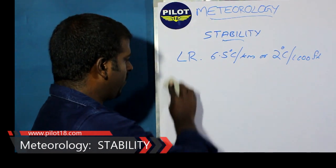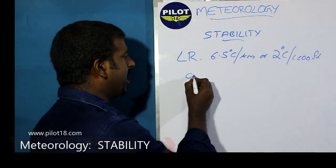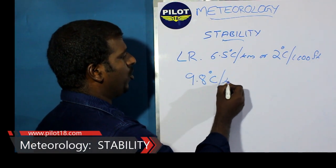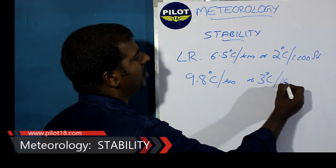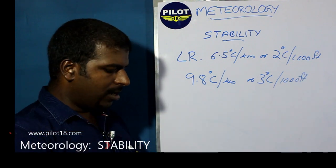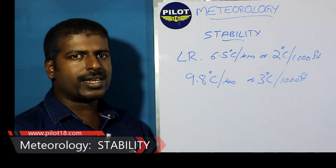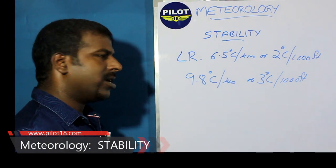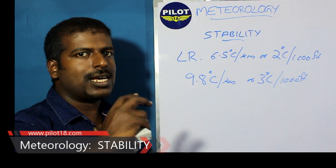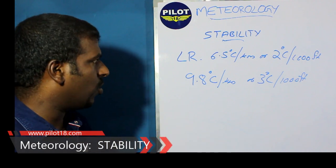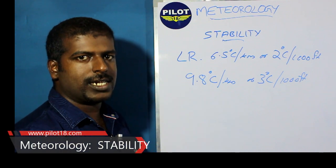What is the DALR value? The dry adiabatic lapse rate of air is 9.8 degrees Celsius per kilometer, or approximately 3 degrees Celsius per thousand feet. But this doesn't correlate with our lapse rate of 6.5 degrees Celsius per kilometer. The reason is that air is not a perfect insulator — it will absorb or release some heat energy.